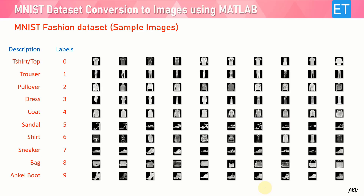This is the glimpse of the Fashion MNIST dataset. It has labels similar to the digit dataset — 0 through 9. Label 0 is T-shirt/top, label 1 is trousers, label 2 is pullover, then dress, coat, sandals, shirt, sneakers, bag, and ankle boots. All images are grayscale and of size 28 by 28.